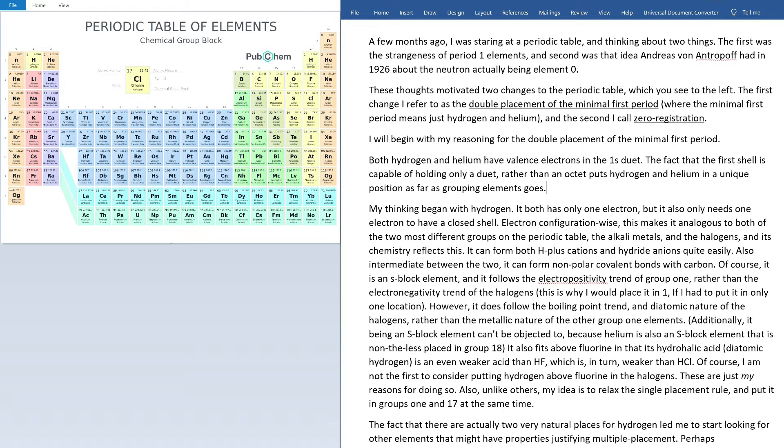So, a few months ago, as I often do, I was staring at a periodic table and thinking about two things. The first was the strangeness of period one elements, and the second was the idea that this guy, whose name I don't really know how to pronounce exactly, had in 1926 about neutrons actually being element zero. Although neutrons I don't think had been discovered yet exactly, he did come up with the idea of an element that had no electrons and no protons, and therefore essentially posited the idea that the neutron was element zero.